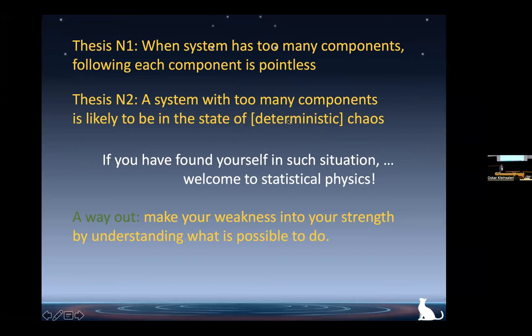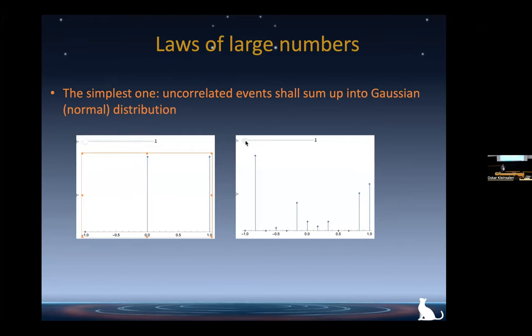Welcome to statistical physics — we have to live with this reality. But the right attitude is to make your weakness into your strength. The moment you accept this weakness it becomes a strength. You start thinking what you can do. And what you can do — the most important result — is the law of large numbers. There are many laws, but the simplest and most important one is this: if you have a sequence of uncorrelated events, as a result they sum up into a normal distribution.